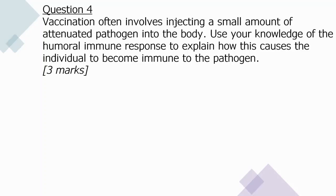Question four: vaccination involves injecting a small amount of attenuated pathogen. Using the humoral immune response, explain how this causes immunity (five marks). Helper T cells or antigen-presenting B cells stimulate B cells specific to the pathogen, causing them to replicate by mitosis — clonal expansion. B cell clones differentiate into plasma cells and B memory cells. If the individual is later infected, the secondary immune response occurs and B memory cells produce a high concentration of antibodies rapidly.